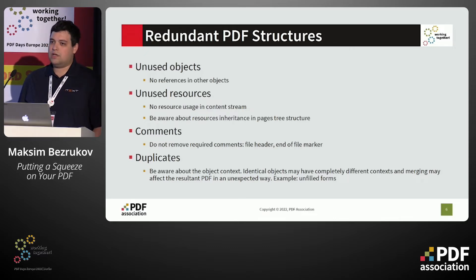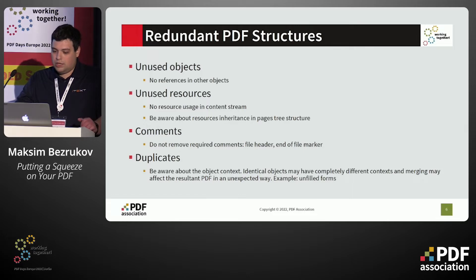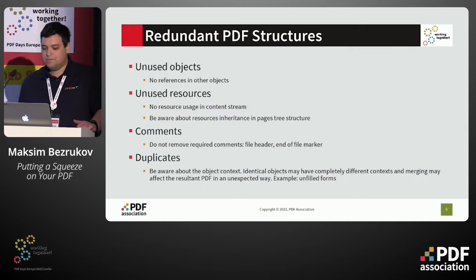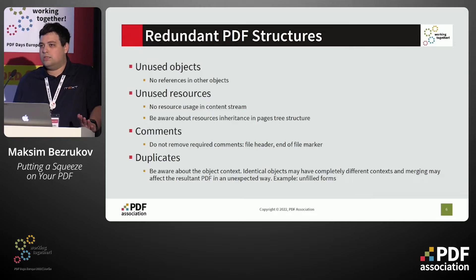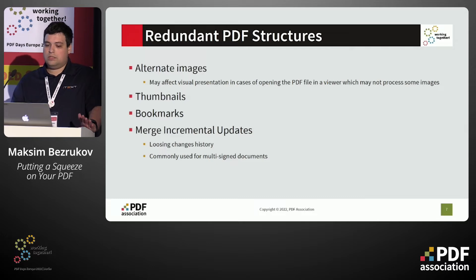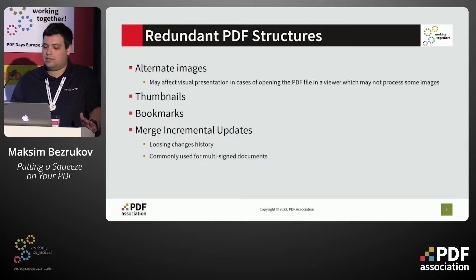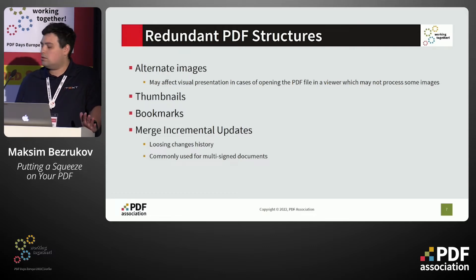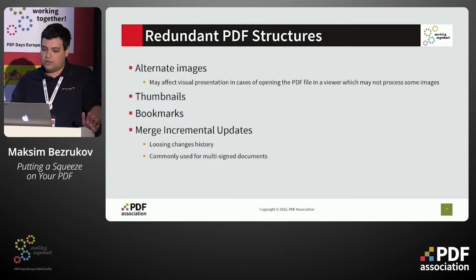Also, duplicates: if we have some duplicating direct objects, we can replace one with another and use only a single one. But be aware of object context — identical objects might have completely different contexts, and merging them may affect the result in unexpected ways. For example, unfilled forms may look identical when empty, but merging them produces a single form, so filling it in one place will affect all other places. Next, alternate images: if the viewer displays your image well, alternate images are not used in its appearance, though removing them may affect viewers which cannot open your image. Thumbnails and bookmarks are useful for navigation but do not affect visual appearance and can be cleaned up.